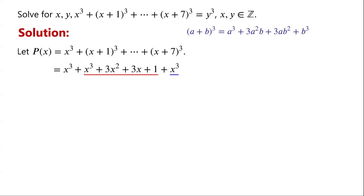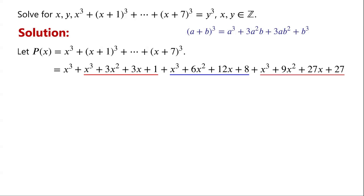(x+2) cubed equals x cubed plus 6x squared plus 12x plus 8. (x+3) cubed equals x cubed plus 9x squared plus 27x plus 27.